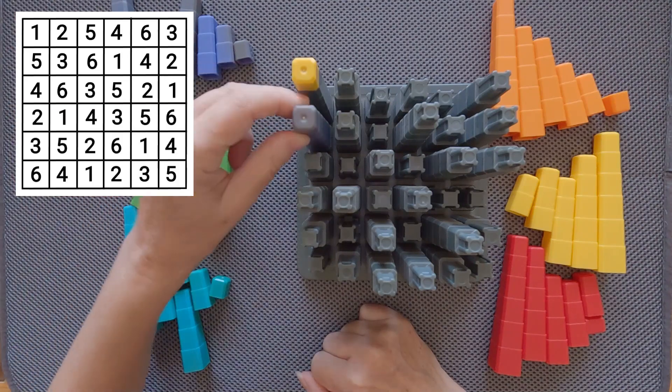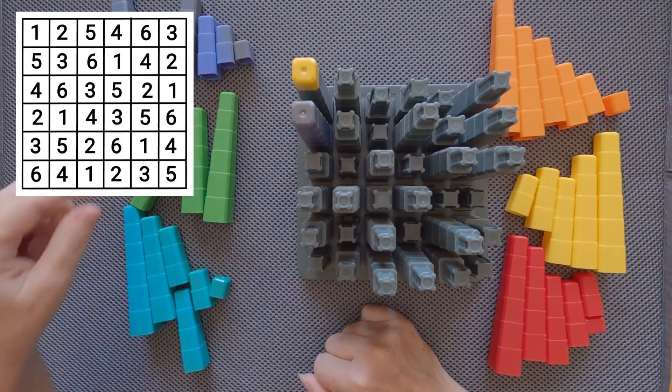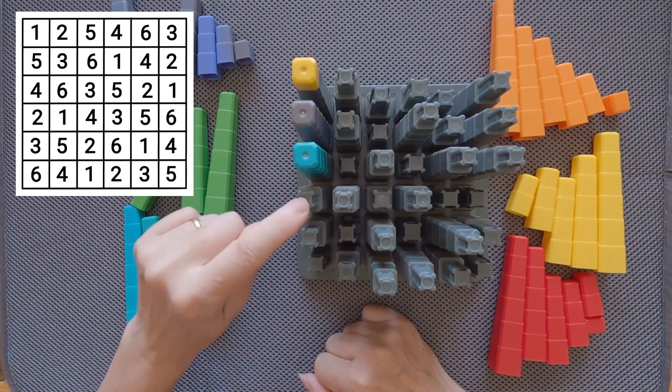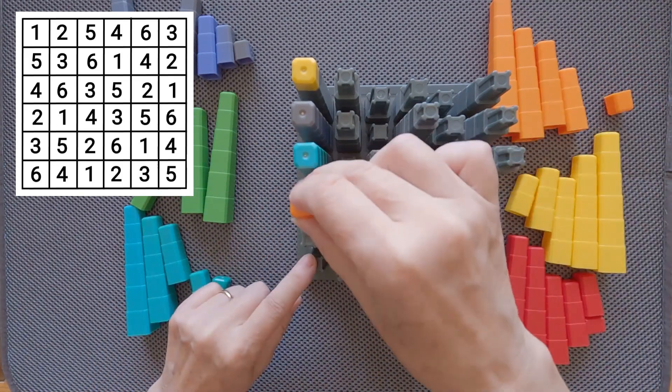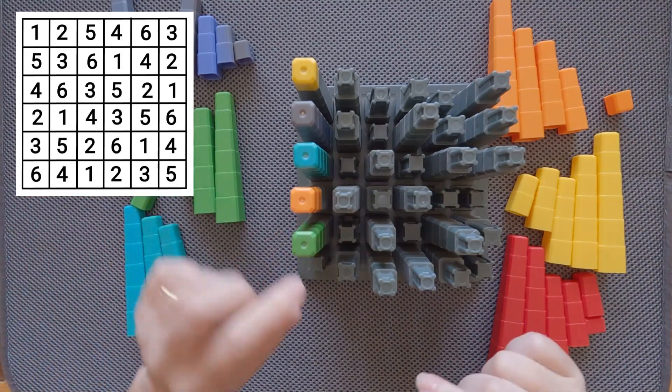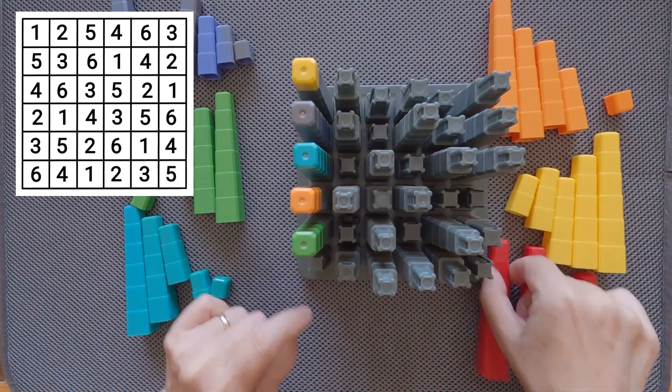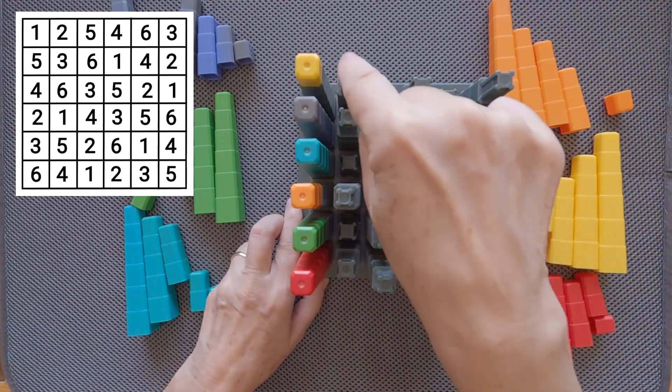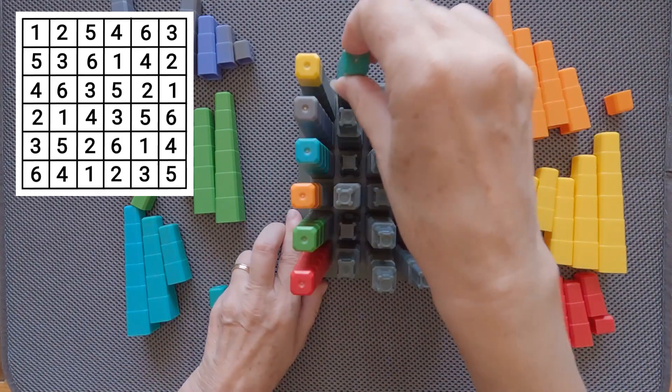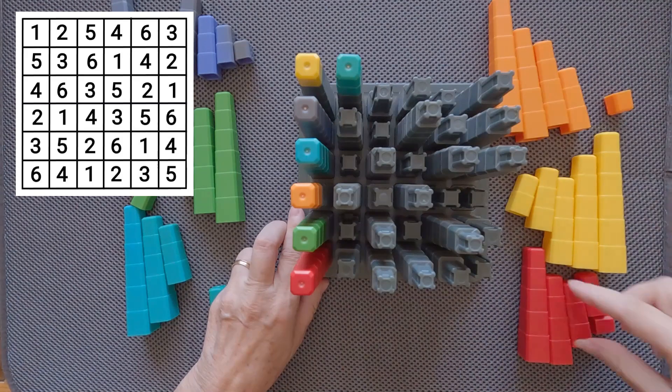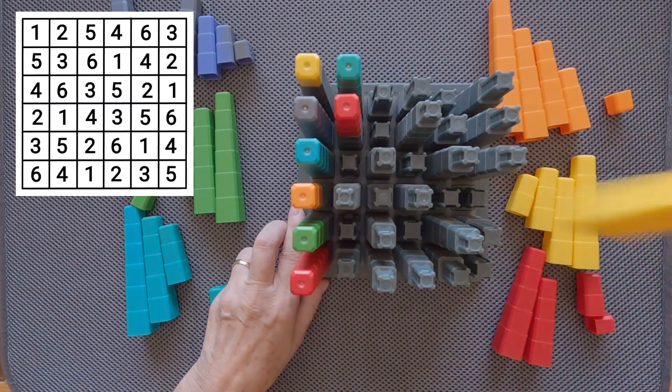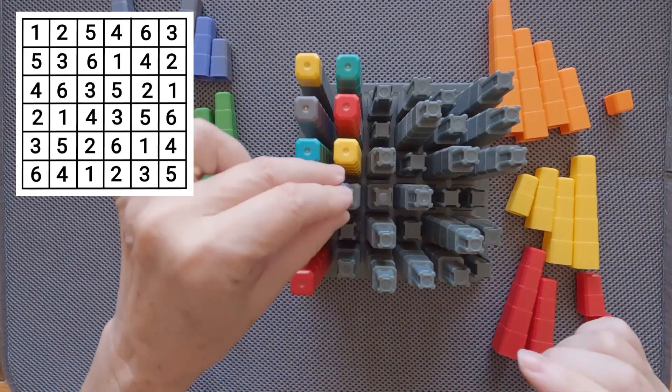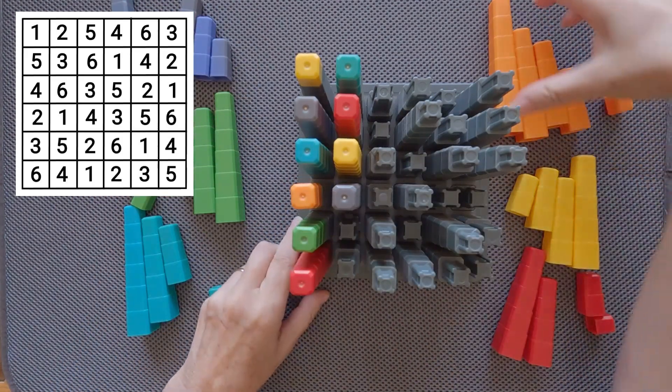I'm going to take the gray, followed by a turquoise four, two orange, three green, and six red. Second column, I need two turquoise, three red, six yellow, one gray, five orange, and four green.